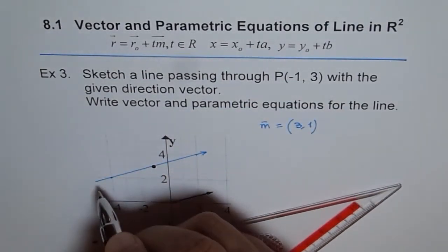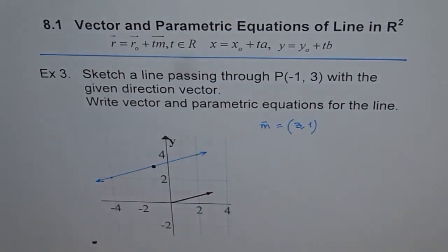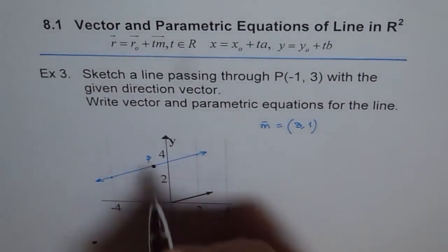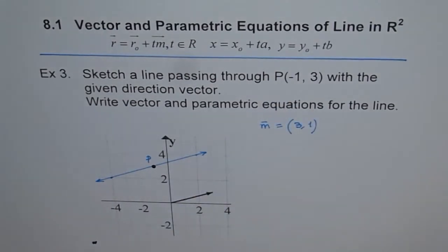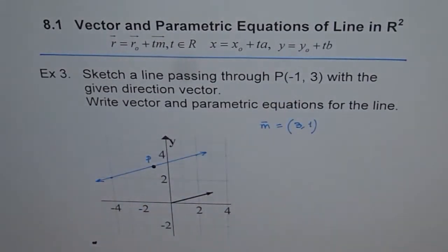There it is, that's it. And the line is in both directions, correct? So it's a direction vector and the point given to us is point P, which is (-1, 3). To write the vector and parametric equation for the line: